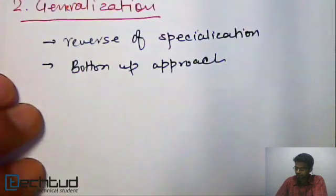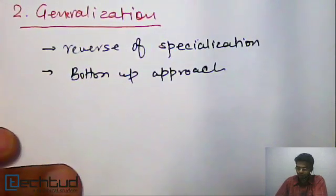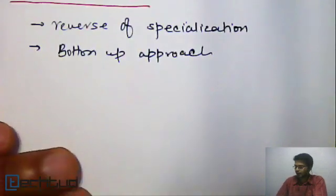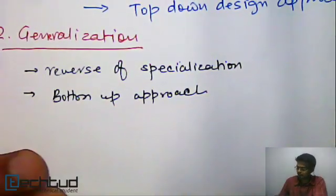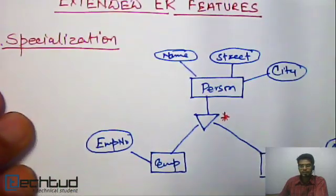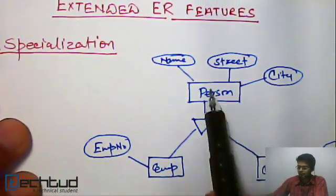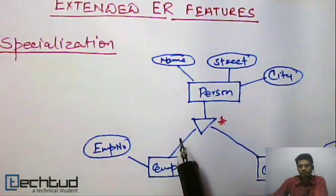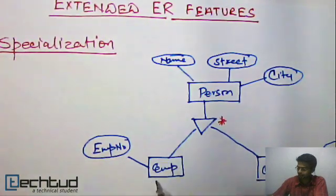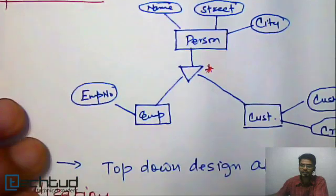So let's understand what it is with an example. Let's revise what we studied in last lecture. We studied that this person is specialized by adding some additional attribute into employee and customer.